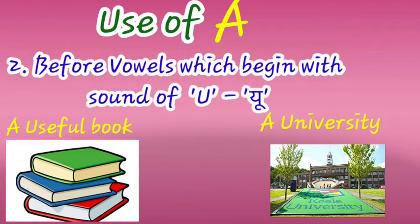The second use of 'a' is before vowels which begin with the sound of 'you' (u). It is based on sound, not spelling. For example, 'U' is a vowel as an alphabet, but when its sound is 'you,' we use 'a.' For example: 'a useful book' — 'useful' starts with the vowel U but gives the sound 'you'; 'a university' — same rule applies.